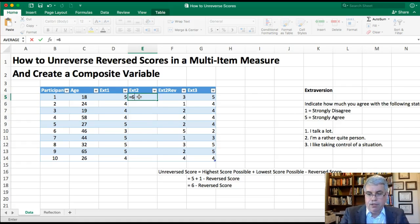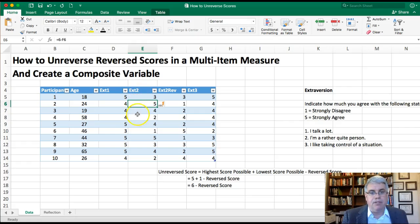Equals six minus, now I'm going to put the cell number, the cell identification, cell location for the reverse score, which is F5. So I'm going to type in F5 there. And now I'm going to press enter, and because this is a table, an Excel table, it calculated everything for us. And so the three became a three, a one became a five, a two became a four, a four became a two, so the reverse scores became their opposite.